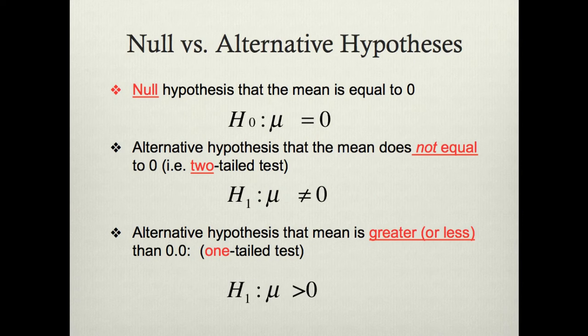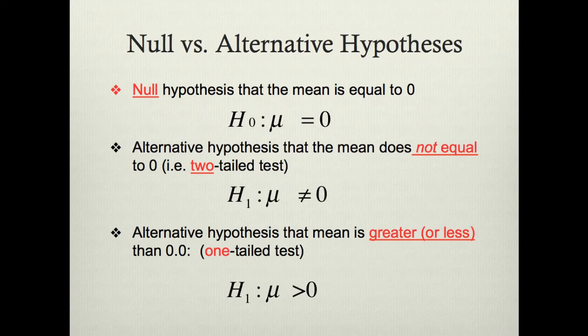There are two basic types of alternative hypotheses. A two-tailed alternative hypothesis does not speculate that a sample is less than or greater than the population — just that it differs. It doesn't speculate that the efficacy of one medicine is worse or better than another, just that they differ. A two-tailed alternative hypothesis claiming that the population mean will not equal zero could be denoted as mu ≠ 0, using the Greek letter mu for the population parameter.